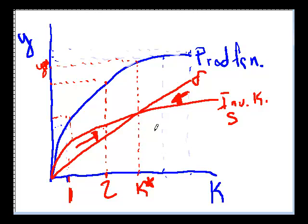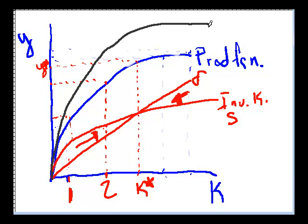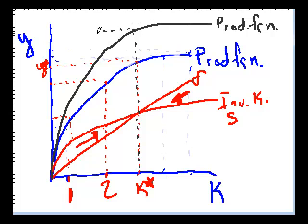Because, as you know, trailer parks attract aliens, and aliens have new technology. New technology is really important in this graph. So once we get the alien technology, our production function goes up. Now we have the same amount of capital, but we have this new technology which allows us to grow. So we went from Y star to Y star star.